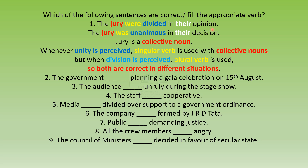The jury were divided in their opinion, and the jury was unanimous in their decision. Jury is a collective noun. Whenever unity is perceived, a singular verb is used with collective nouns. But when division is perceived, a plural verb is used — as in 'divided'. So both sentences are correct depending on their situations.